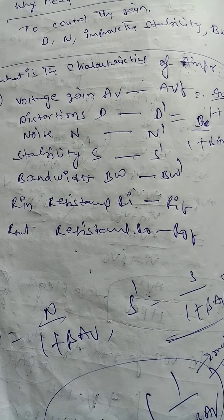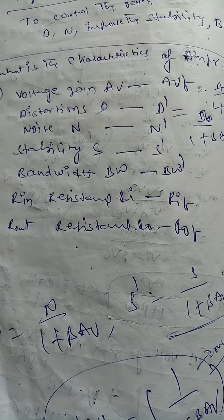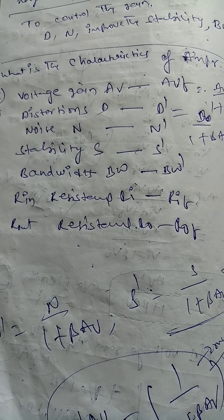When you use negative feedback in an amplifier, the gain decreases. This is the negative feedback amplifier circuit diagram and derivation. Using negative feedback causes gain to decrease, noise to decrease, and stability and bandwidth to increase. Additionally, based on the connection parameters, the input and output resistance will vary. These are the characteristics of the negative feedback amplifier.